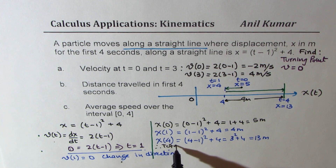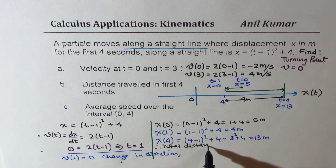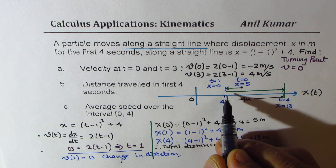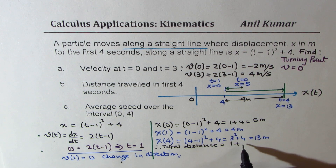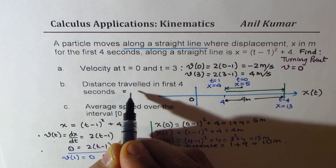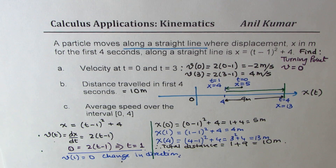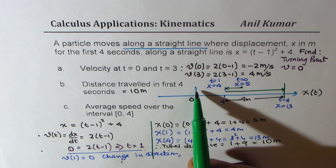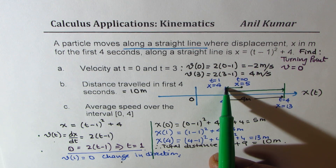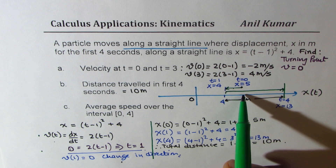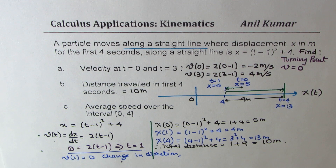Total distance travelled is 1 meter in the first second, and then in the next 3 seconds it travelled 9 meters towards the right: 1 plus 9 equals 10 meters. The distance travelled in the first 4 seconds is 10 meters.